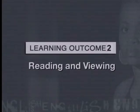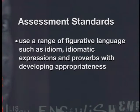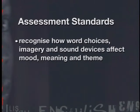The lessons in this series address Learning Outcome 2, Reading and Viewing, and Learning Outcome 4, Language. They will help learners to achieve a range of assessment standards, including being able to use a range of figurative language such as idiom, idiomatic expressions, and proverbs with developing appropriateness, and to recognize how word choices, imagery, and sound devices affect mood, meaning, and theme.